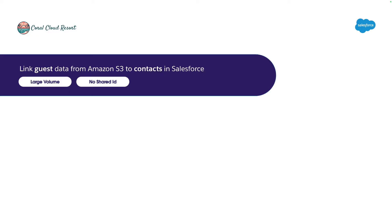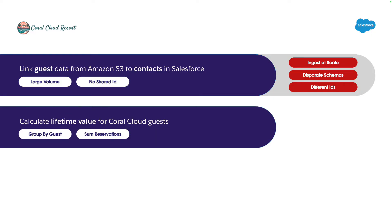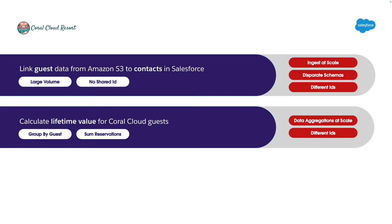The hotel is looking to meet three goals, and has identified some challenges they might face. They want to bring guest data in from Amazon S3, where it's currently stored, and link them to contacts in Salesforce — and they need this to operate for hundreds of millions of records. They need to cater for different schemas between Amazon and Salesforce, and work out how they find unique guest profiles across the systems. They also want to calculate lifetime value for Coral Cloud guests — running aggregations like sum and group by across millions of records, and grouping by unique guests even when they may not be recognized as the same person.